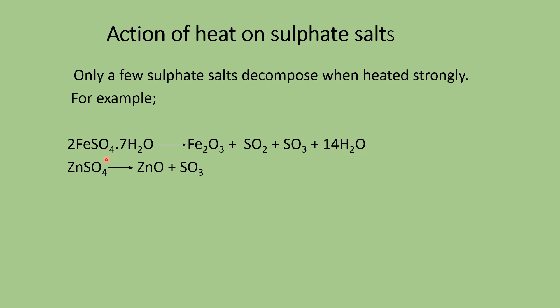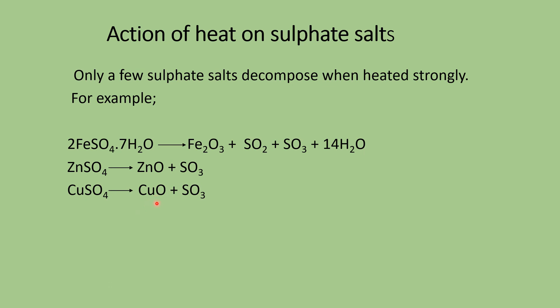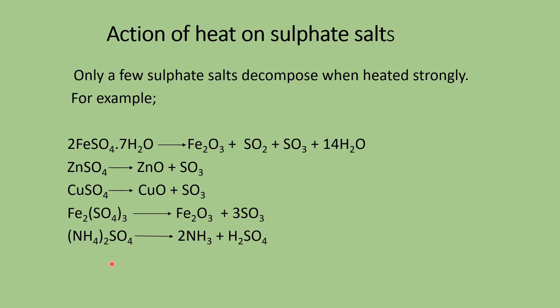Zinc sulfate produces zinc oxide and sulfur trioxide. Copper sulfate produces copper oxide and sulfur trioxide — copper oxide is black. Zinc oxide when hot is yellow, and when cool it is white. Iron(III) sulfate produces iron(II) oxide and sulfur trioxide. The last one is ammonium sulfate — it produces ammonia gas and sulfuric acid.